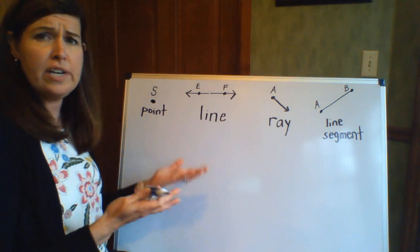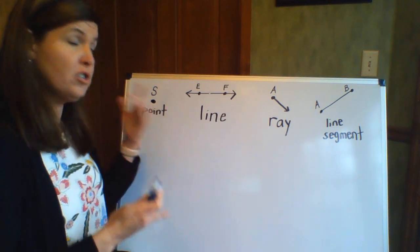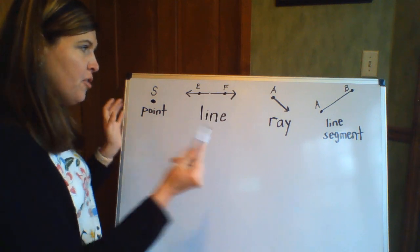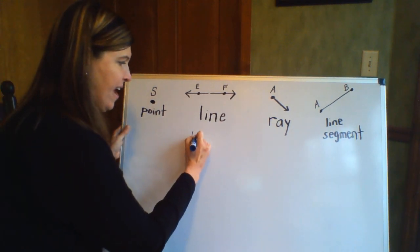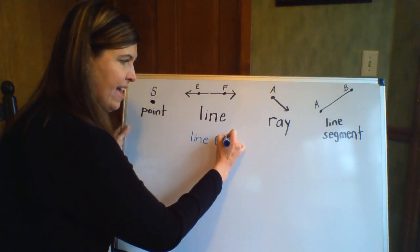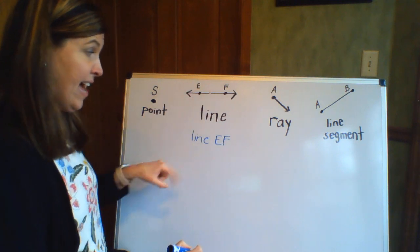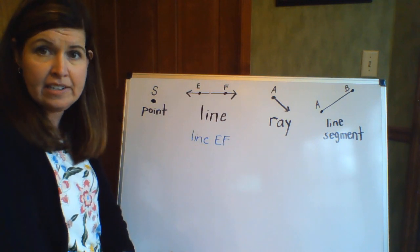Now what if I wanted to write and label this line? There's two ways I can do it. The one way is I could write it as line EF, which means that this is a line and it has points E and F on it.